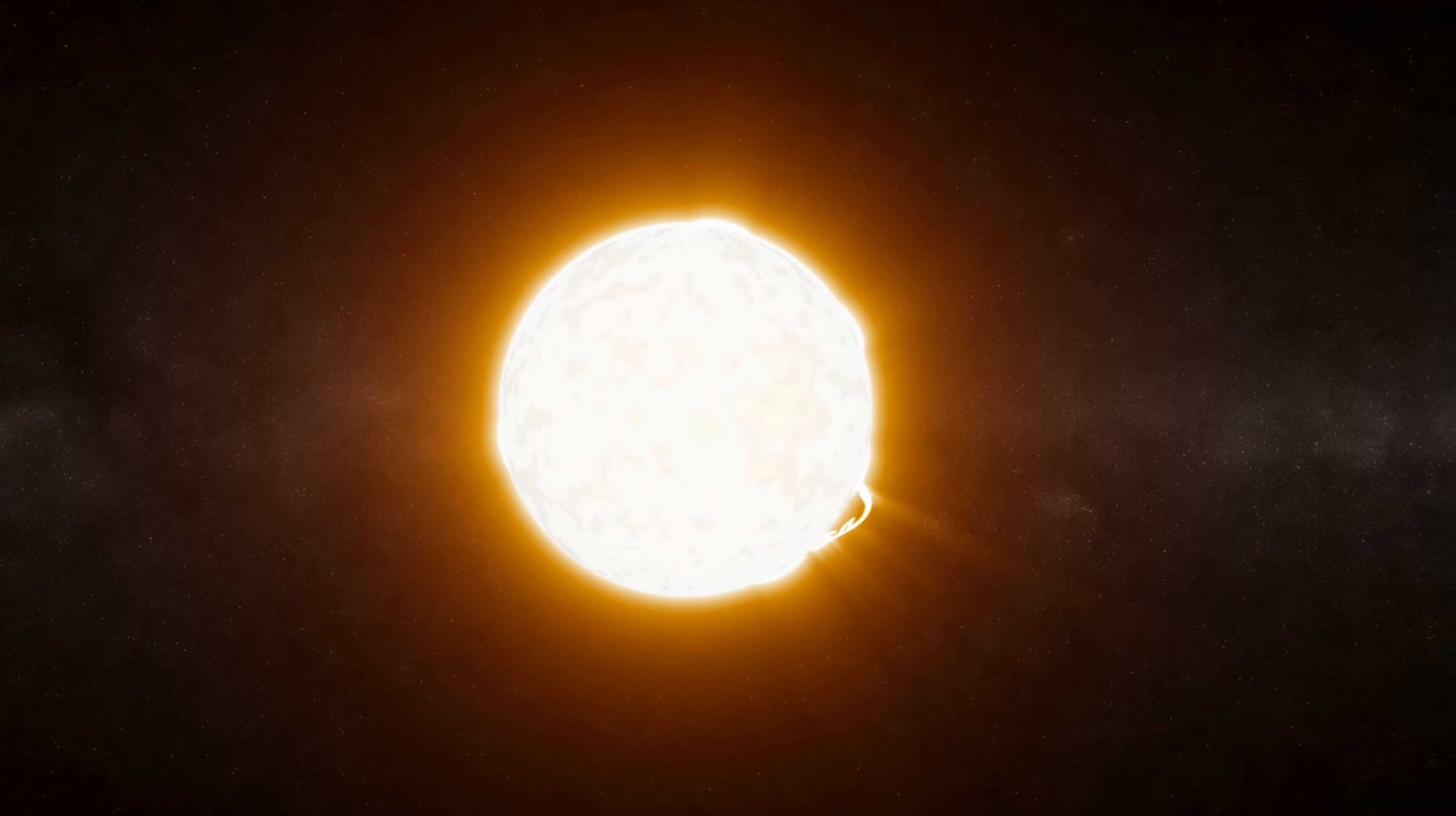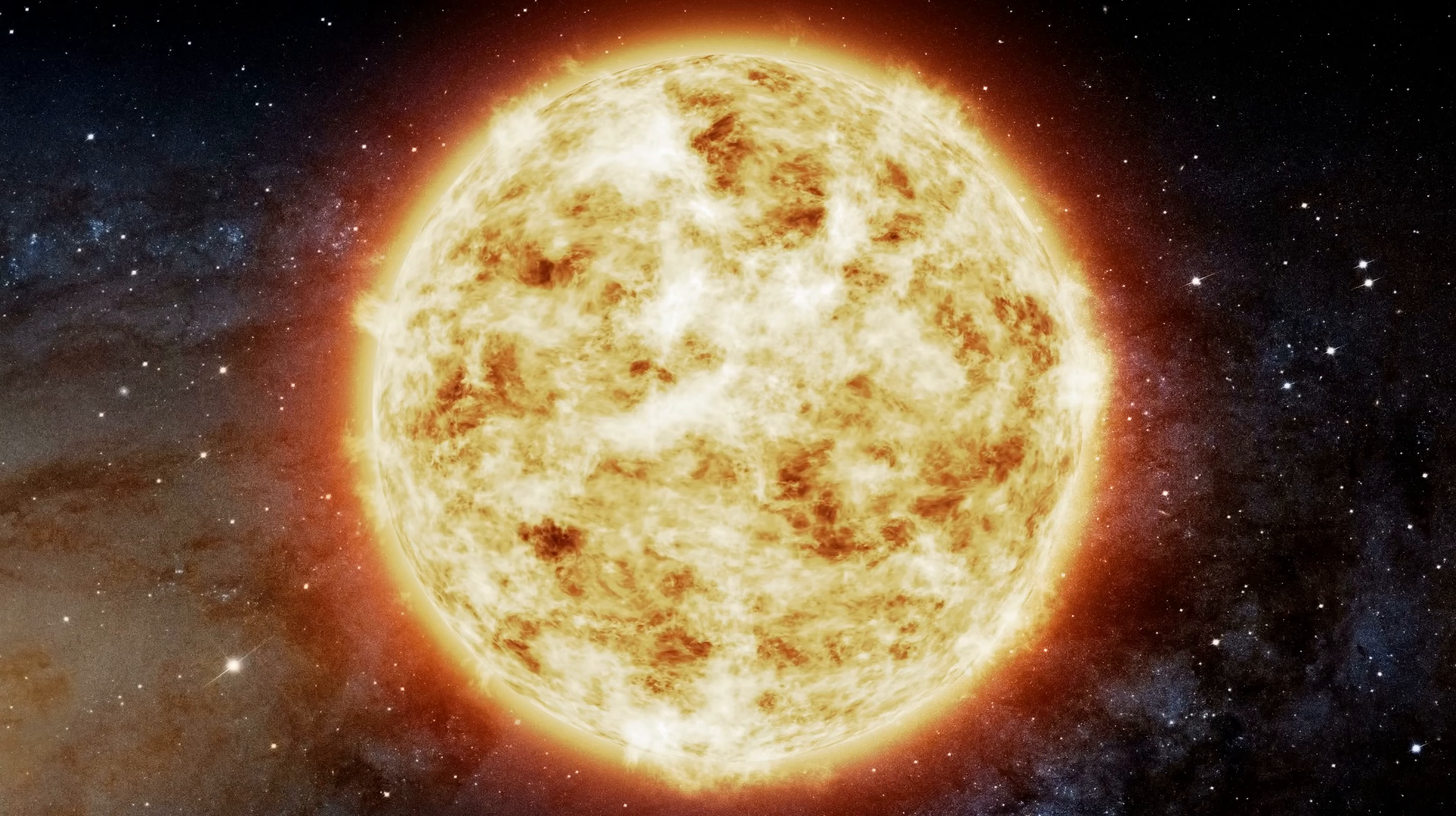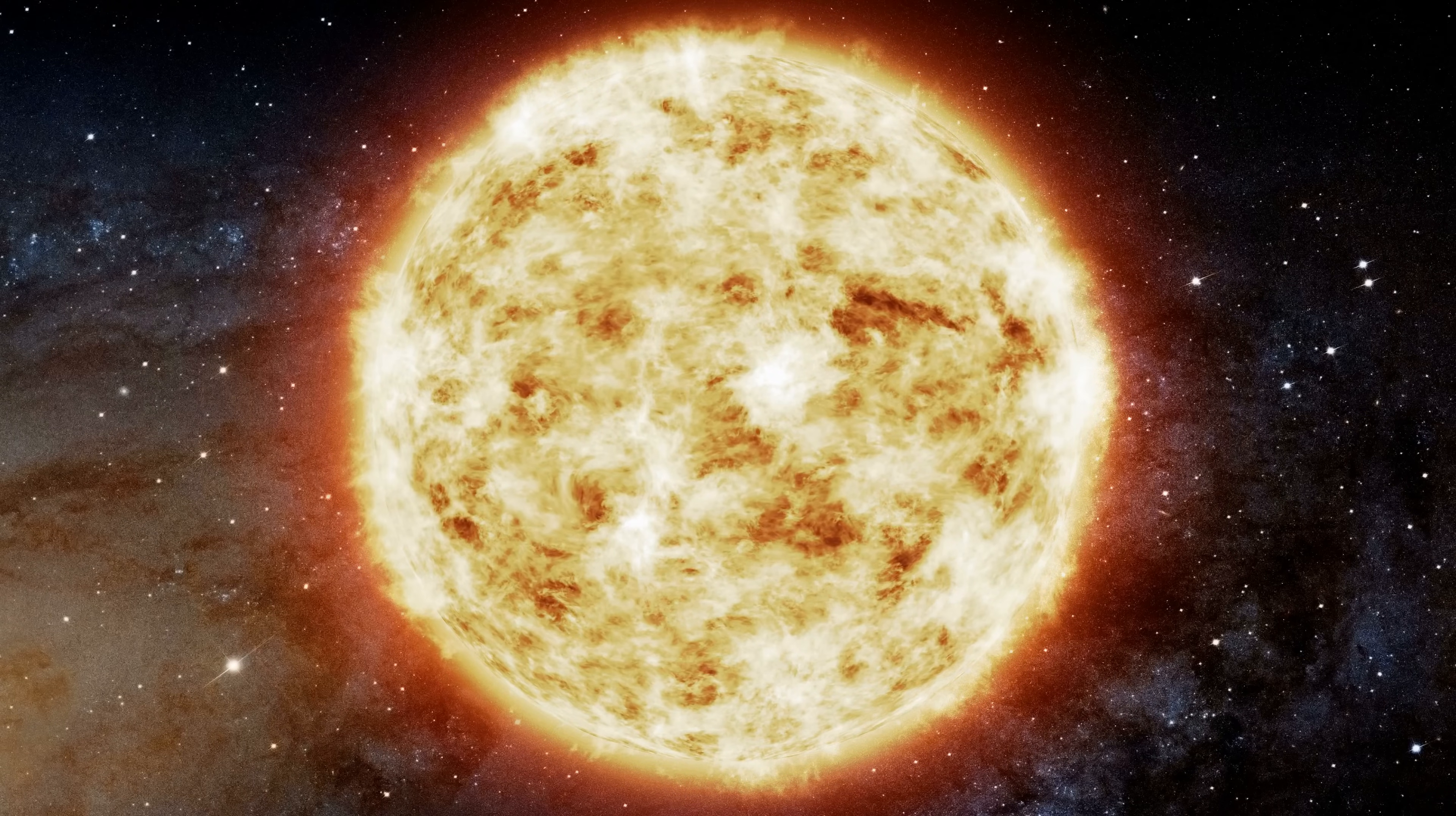Our solar system is huge, so huge that some of the objects in it are billions of miles away from each other. As you've heard, the sun is the center of this neighborhood we call our solar system. Our sun is a star, a gigantic, unbelievably hot mass of gas that makes light and heat for everything that orbits around it.